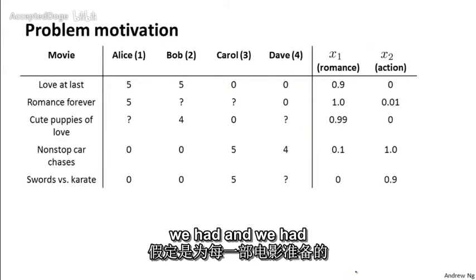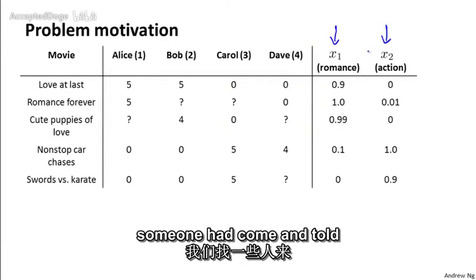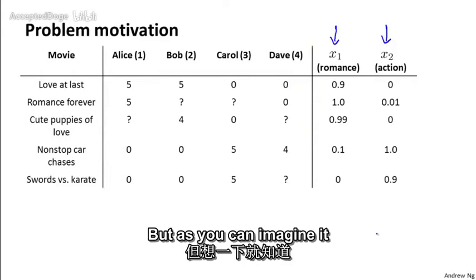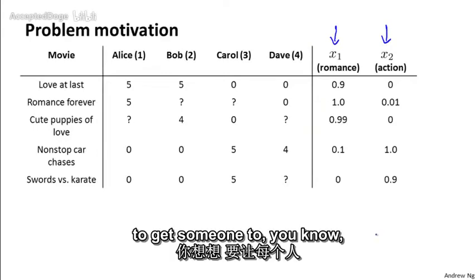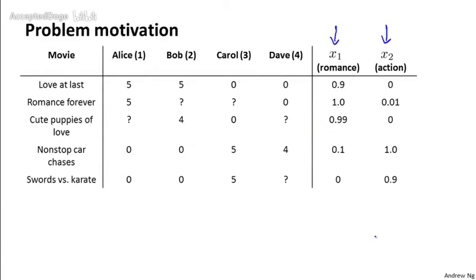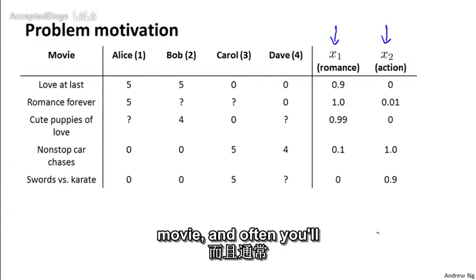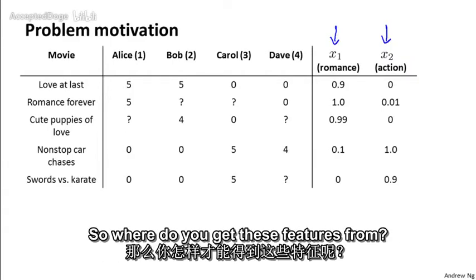Here was the data set that we had, and we had assumed that for each movie, someone had come and told us how romantic that movie was and how much action there was in that movie. But as you can imagine, it can be very difficult and time consuming and expensive to actually try to get someone to watch each movie and tell you how romantic is each movie and how action-packed is each movie. And often you want even more features than just these two. So where do you get these features from?